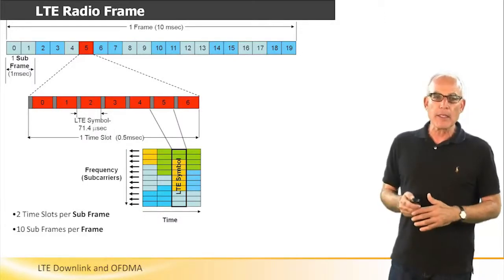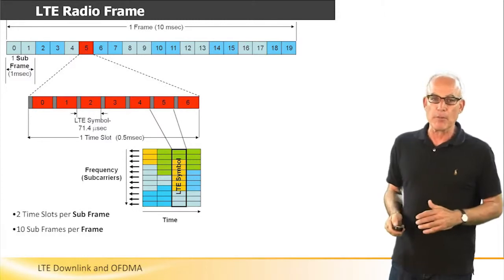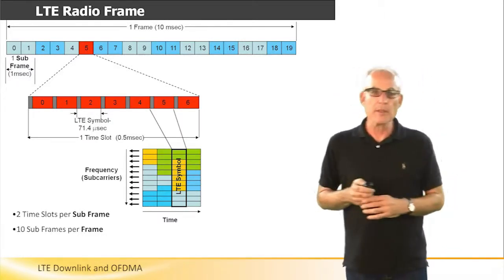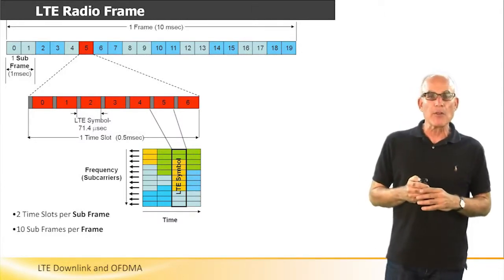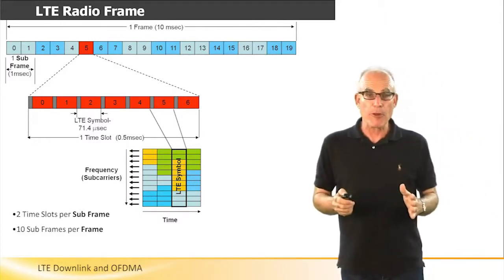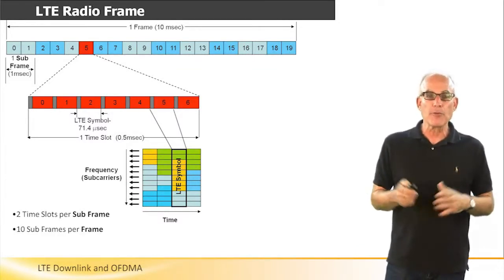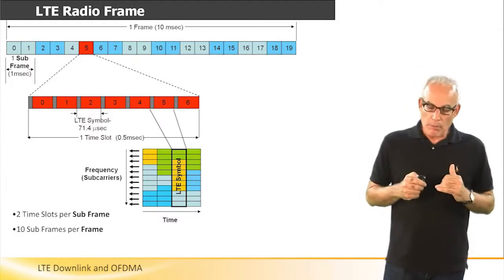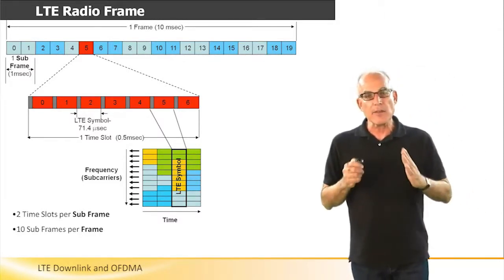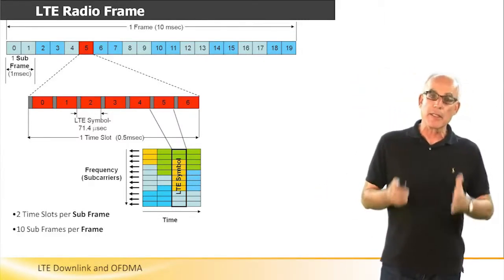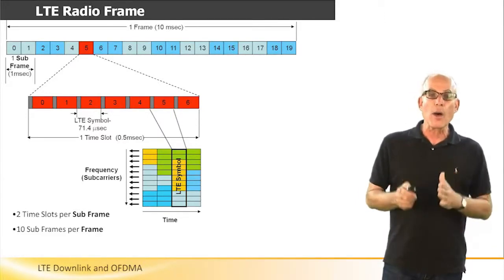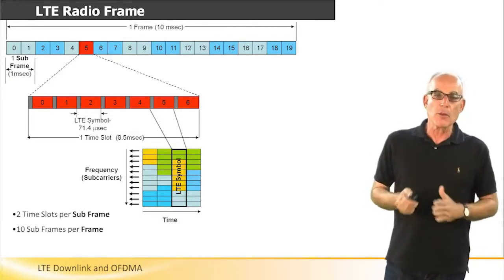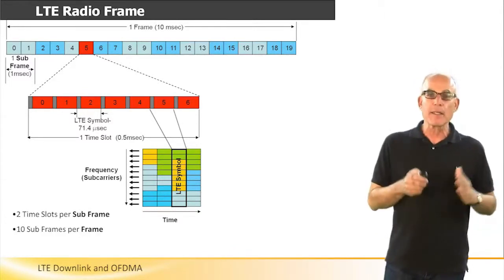Let's have a look now at the LTE FDD radio frame. In the time domain, data is transmitted to the user in a radio frame. The radio frame is comprised of 20 subframes, and each subframe is made out of two time slots. Each time slot includes six or seven LTE symbols. At the lower part of this slide, we see the same idea in two dimensions — the time dimension and the frequency dimension — with a zoom-in on one LTE symbol showing the subcarriers that provide the data at that symbol.